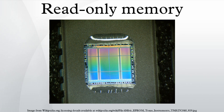EPROM chip packages can often be identified by the prominent quartz window, which allows UV light to enter. After programming, the window is typically covered with a label to prevent accidental erasure. Some EPROM chips are factory erased before they are packaged and include no window. These are effectively PROM.